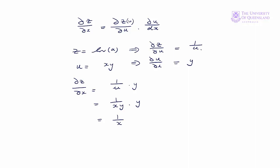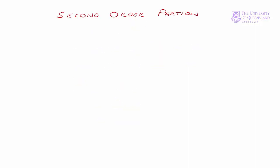Now let's find the second order partials. We start with the first partial with respect to x, del z del x, which equals 1 on x, or x to the minus 1. We differentiate that once more with respect to x: del squared z del x squared. We bring down the exponent giving a minus sign and subtract 1 from the exponent. That's equal to minus 1 on x squared.